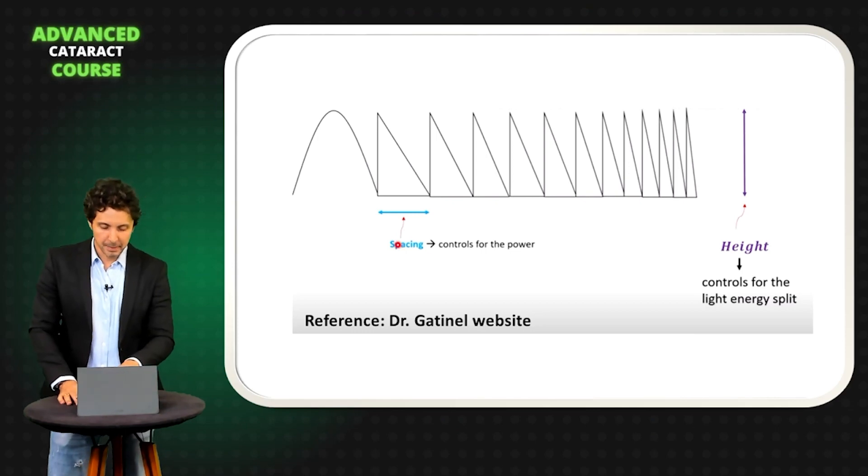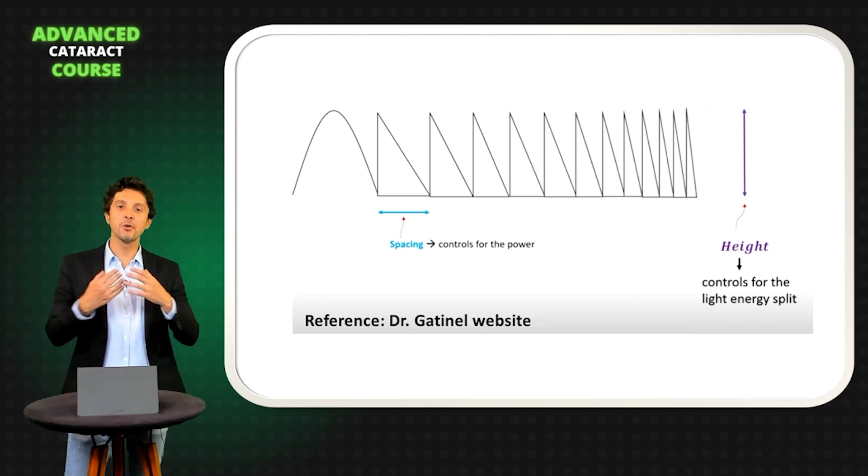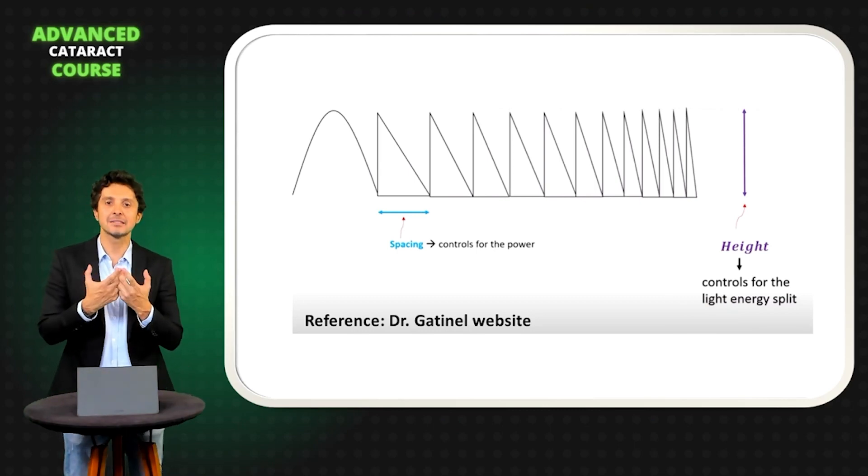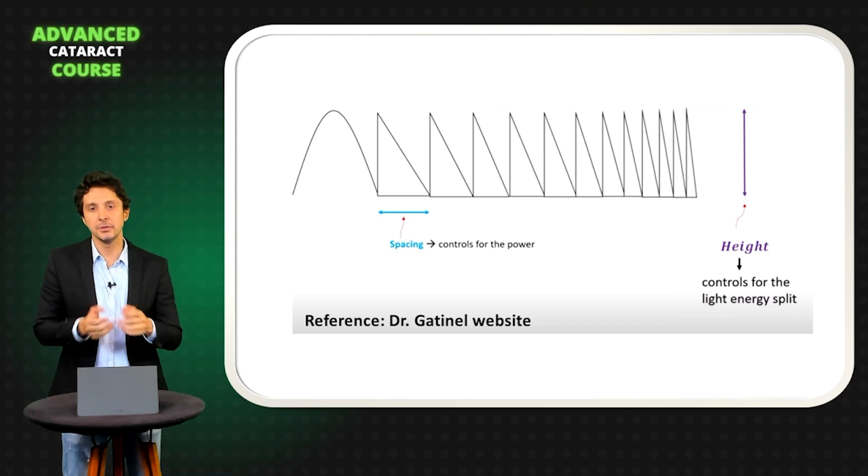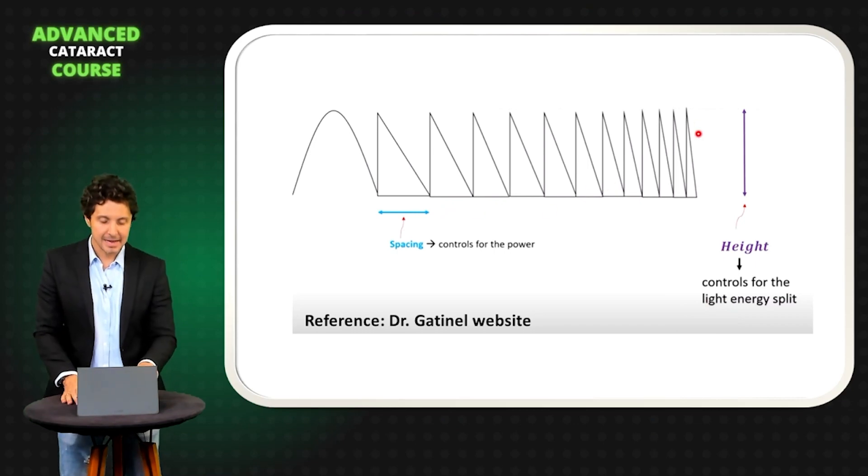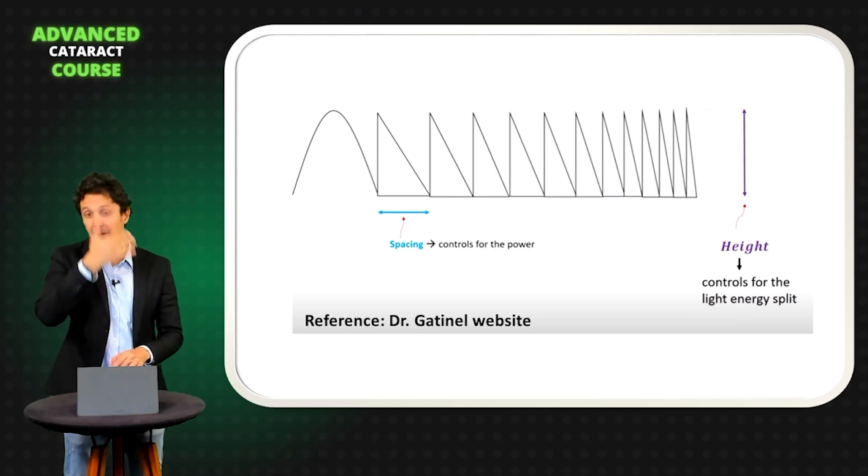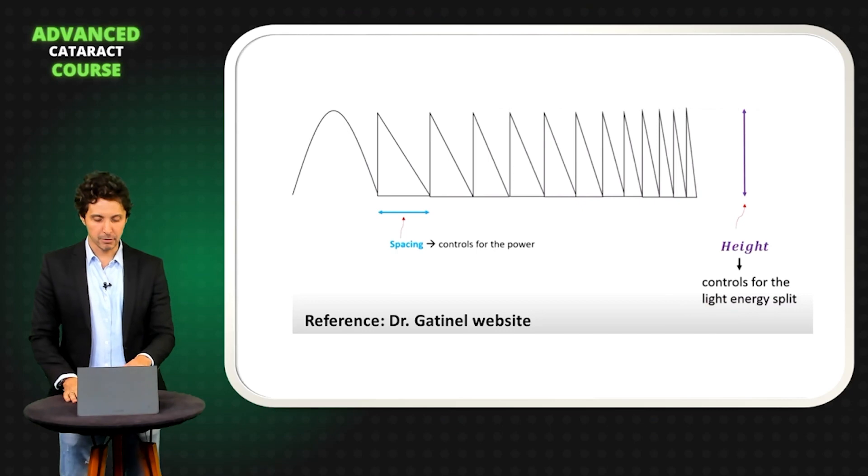You can observe spacing controls the power, but the height controls the light energy split. So if you want in your IOL less energy split, less night symptoms, less halos, you need to modify this height. This is the second rule to produce an amazing trifocal IOL.